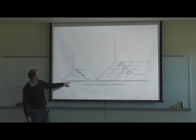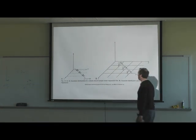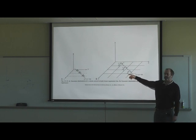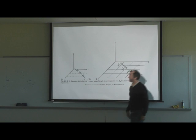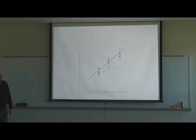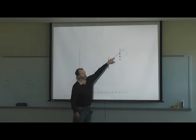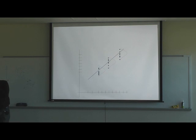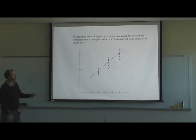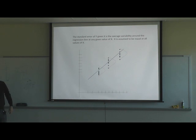That's called a Gaussian distribution of Y values, and that describes normal simple linear regression. There's also Deming regression where the data are distributed over both X and Y. The standard error of Y given X is the average variability around the regression line at any given value of X, and it's assumed to be equal at all levels of X.